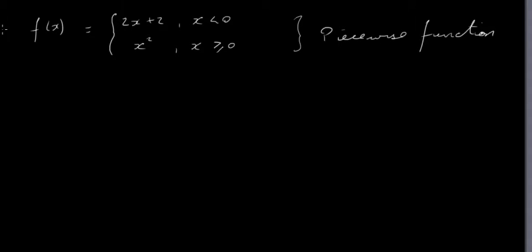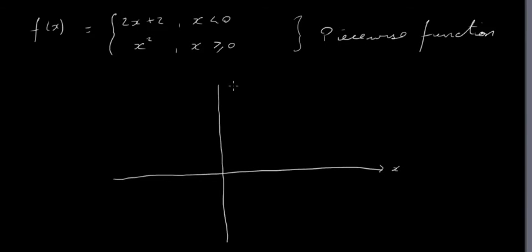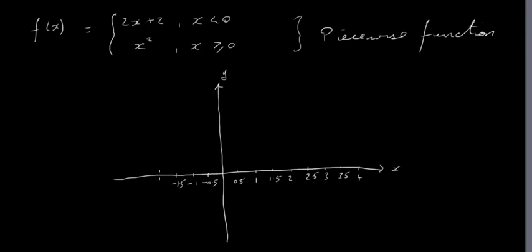Let's draw that function first. We have a y-axis and an x-axis. On the x-axis we'll go up in 0.5 increments: 0.5, 1, 1.5, 2, 2.5, 3, 3.5, 4, and on the negative side: minus 0.5, minus 1, minus 1.5, minus 2. On the y-axis we'll go up in 1s.